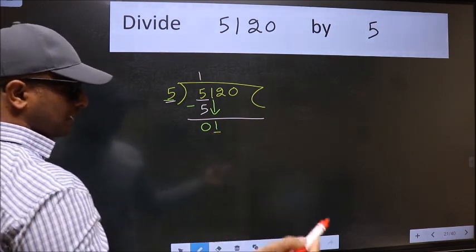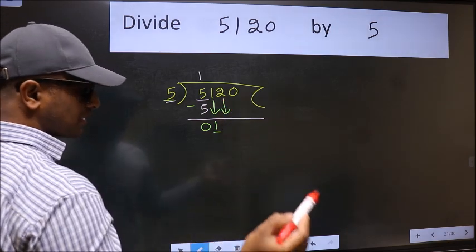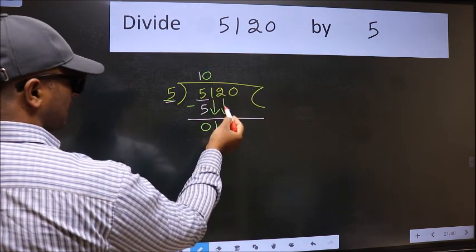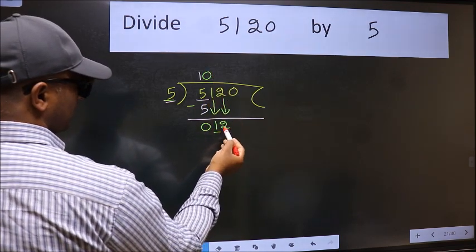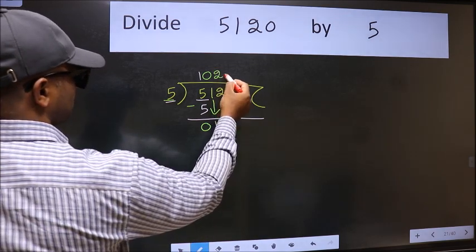So we should bring down the second number. And the rule to bring down second number is we should put 0 here. Then only we can bring this number down. Now 12. A number close to 12 in 5 table is 5 to 10.